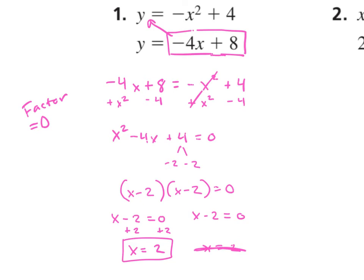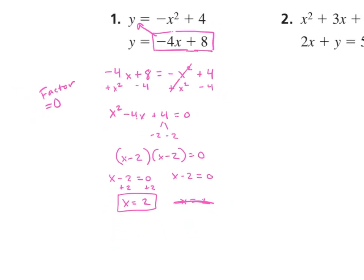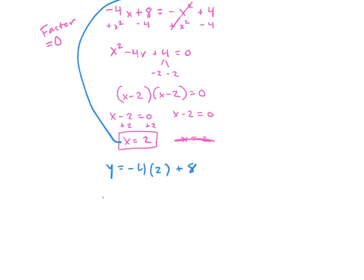Once we get a value for x, we plug it back in to find y. We plug into the second equation since it's simpler. Substituting x equals 2: y equals negative 4 times 2 plus 8. Negative 8 plus 8 equals 0. So y equals 0, and we write our answer as the coordinate point (2, 0).